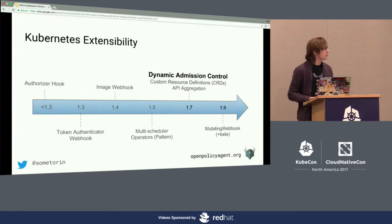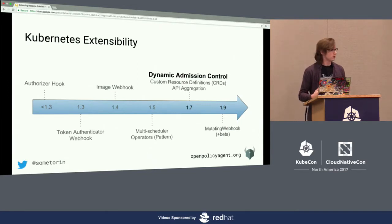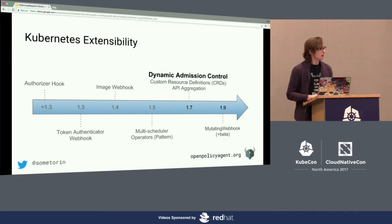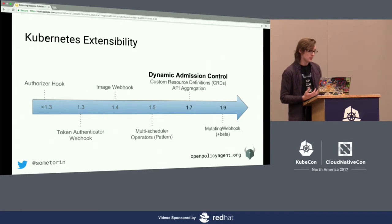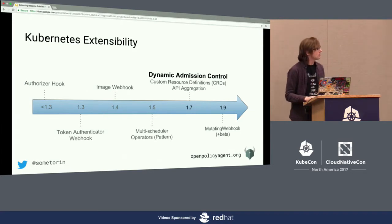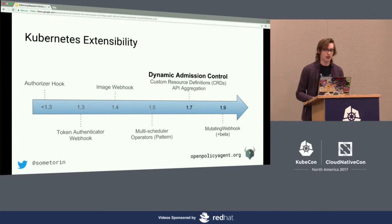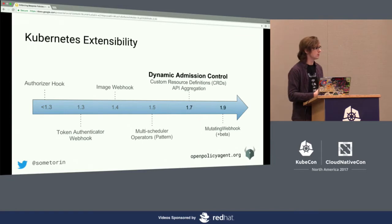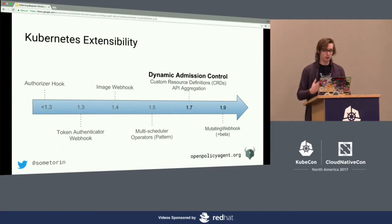Over time, Kubernetes has developed a bunch of features around extensibility as it's matured. They've added webhooks for things like authorization, authentication, image policies, scheduling, and more. But in 1.7, they added a great feature called dynamic admission control, and that's what we're going to focus on. It allows you to decouple policy decisions and policy enforcement from Kubernetes itself.